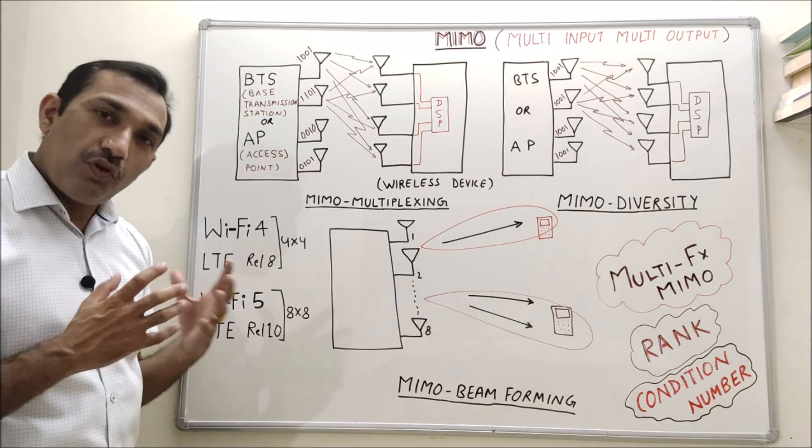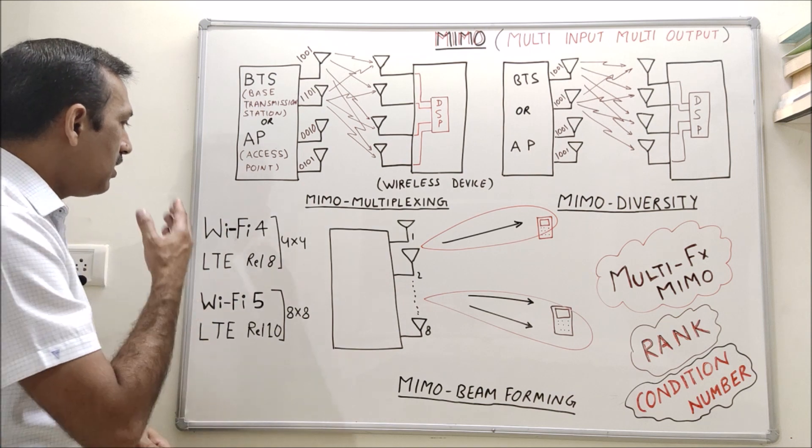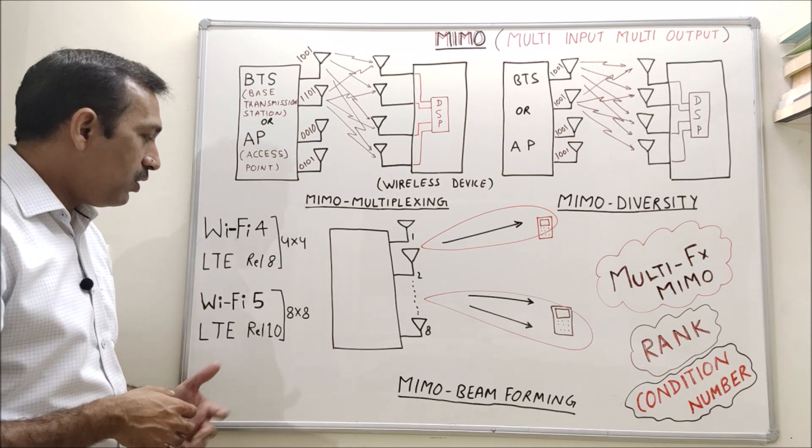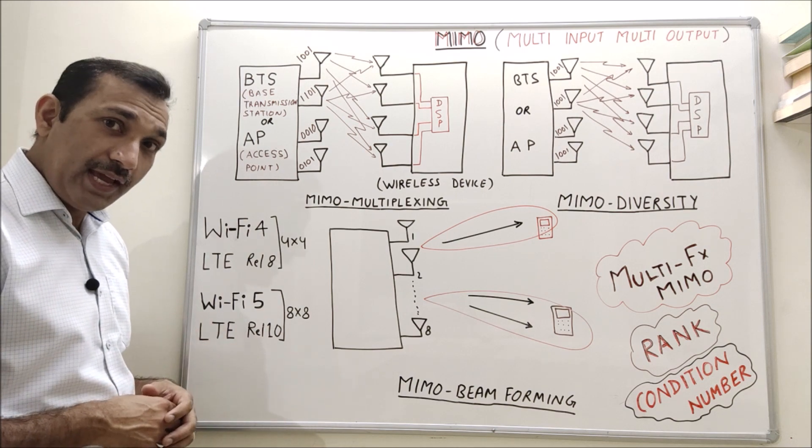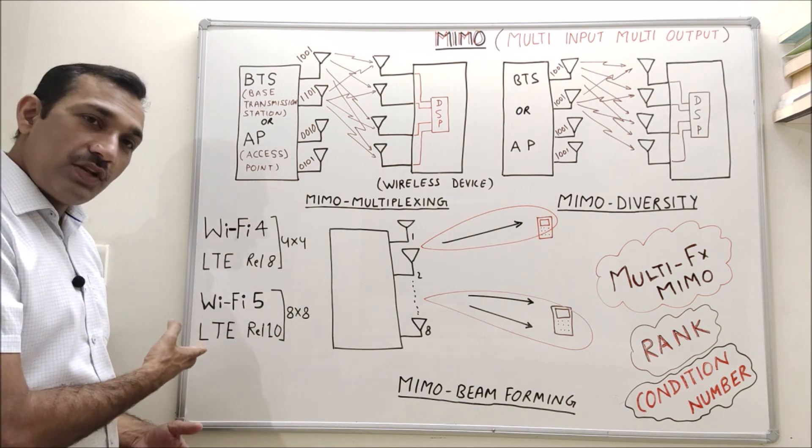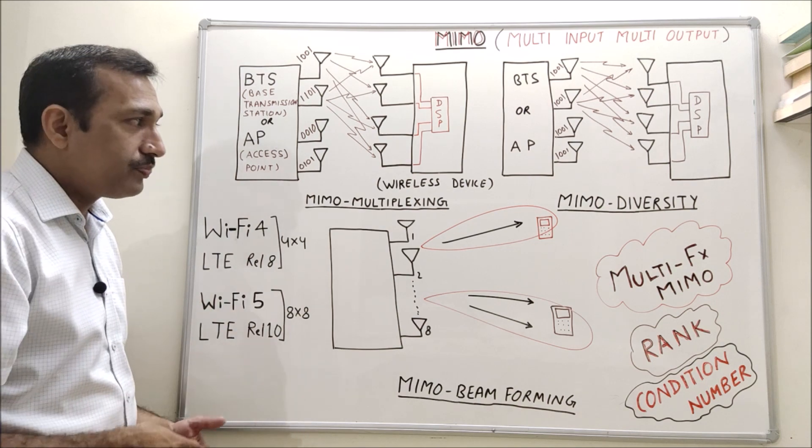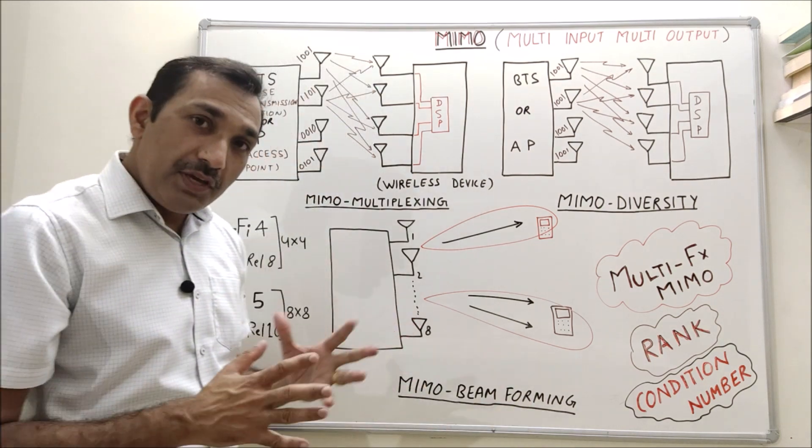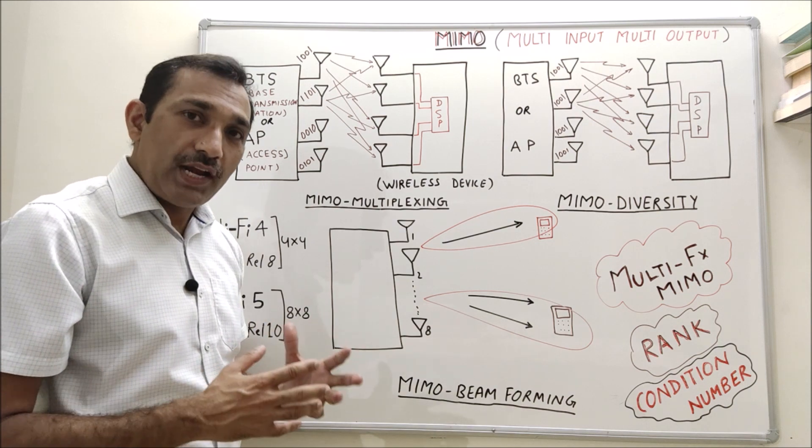But our data rate is not increasing compared to single input single output system because still we are transmitting same data. 4 by 4 MIMO was introduced in Wi-Fi 4 and LTE release 8, while 8 x 8 MIMO was introduced in Wi-Fi 5 and LTE release 10.